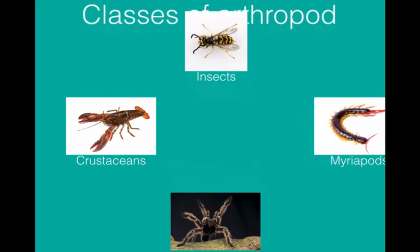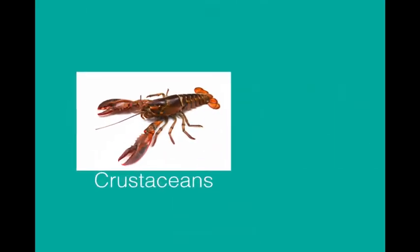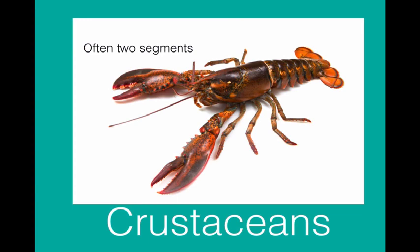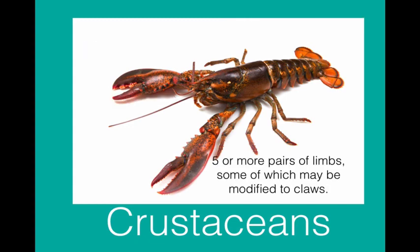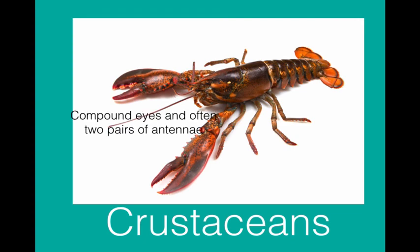The next type are the crustaceans. Crustaceans often have two segments: a cephalothorax — a head and thorax segment joined together — and an abdomen. Sometimes in a crab it can be hard to spot the difference between the segments; it's more obvious in a lobster or a prawn. They have five or more pairs of limbs, some of which may be modified into claws. This lobster has ten limbs, two of which are claws. They have compound eyes and often have two pairs of antennae, though this is not always obvious in pictures.